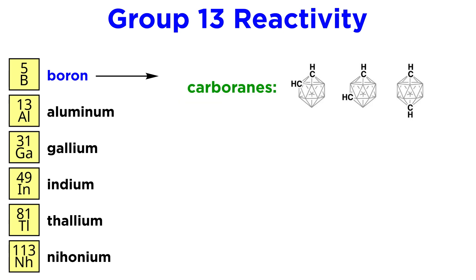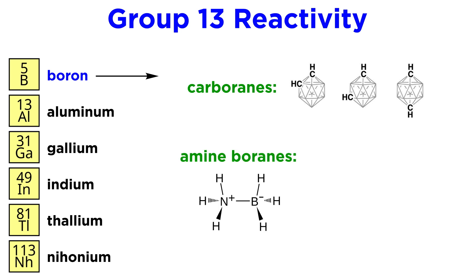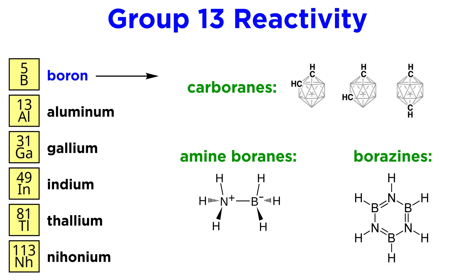Boron also forms carboranes, or boranes with CH+ substituted for certain BH groups; amine boranes, which are analogous to alkanes; and borazines, which are analogous to benzene.